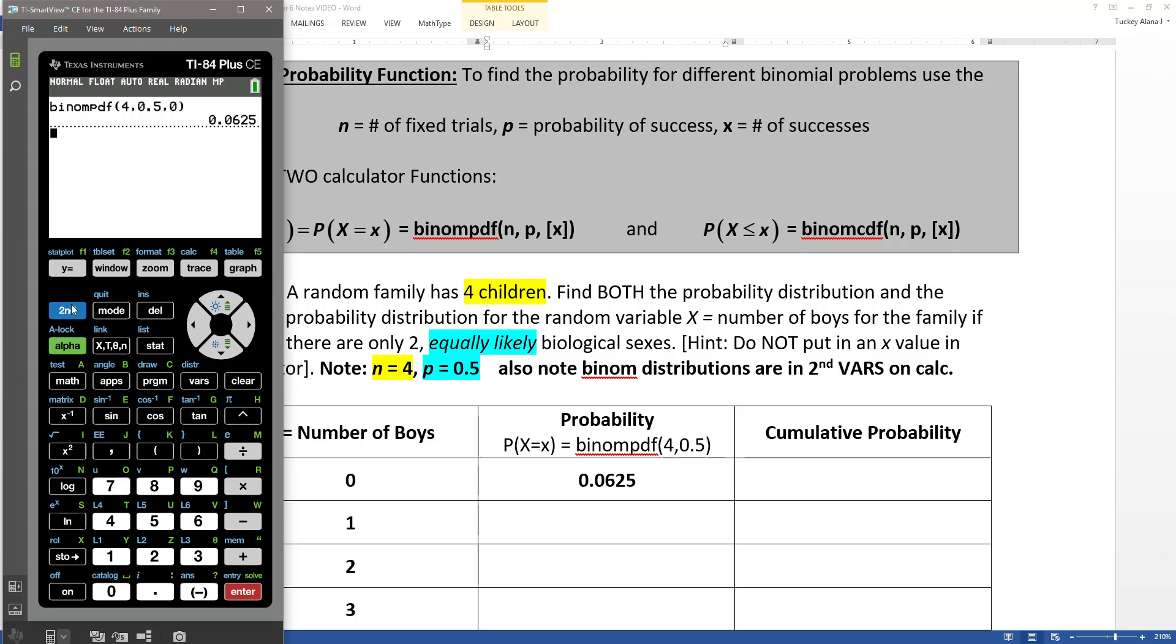So I did binom PDF, but what if I don't put in a zero? Because I could do it again. I could hit second distribution, go to binom PDF, which is letter A, and I could say 4, 0.5, and I could put in 1, and that would give me the next number. And then I paste, press enter after the paste, and there you have it. This is really tedious.